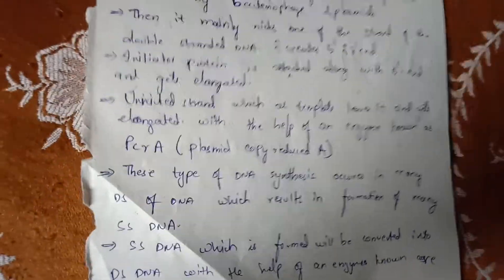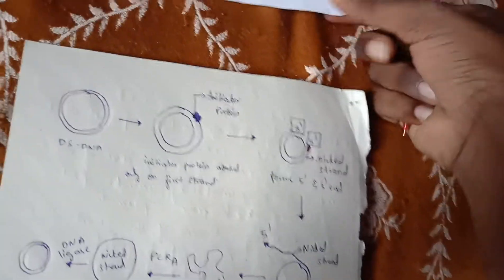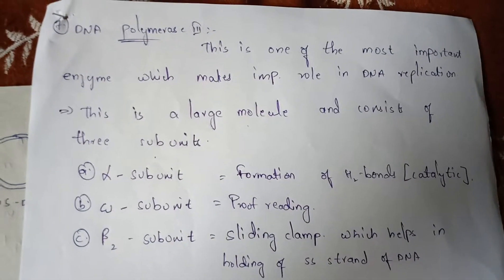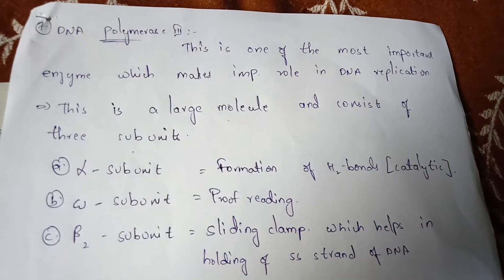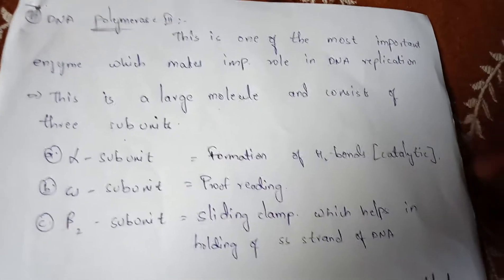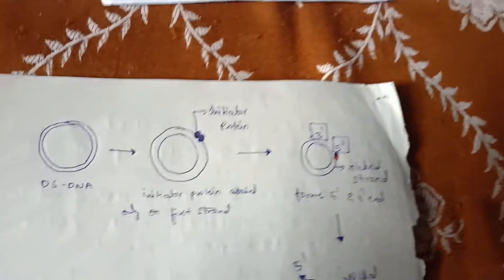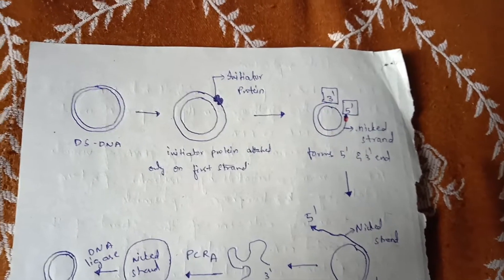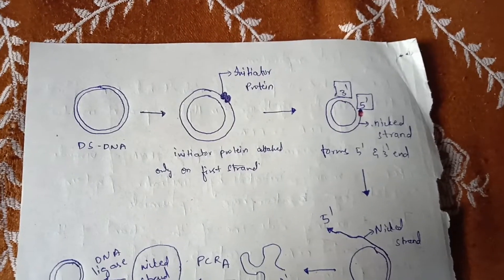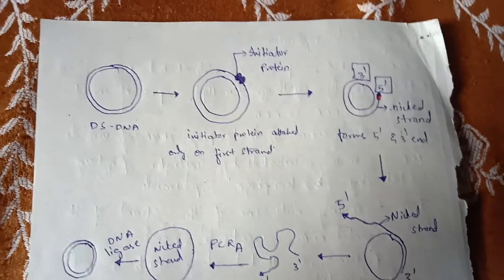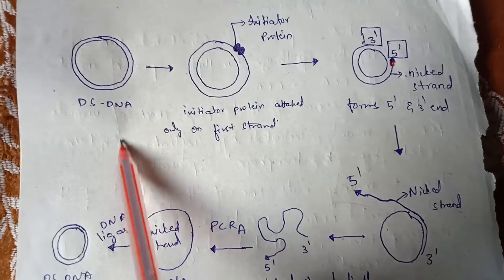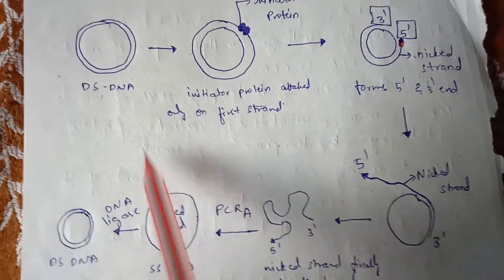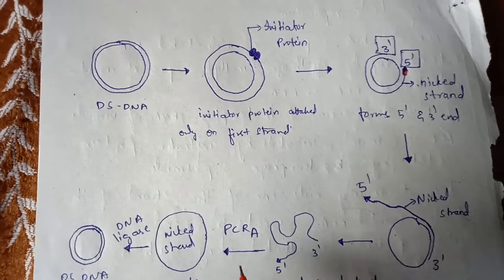The single-stranded DNA formed is then converted into double-stranded DNA with the help of DNA polymerase III and DNA ligase. DNA polymerase III is one of the most important enzymes in DNA replication — its main function is to help convert single-stranded DNA back into double-stranded DNA.